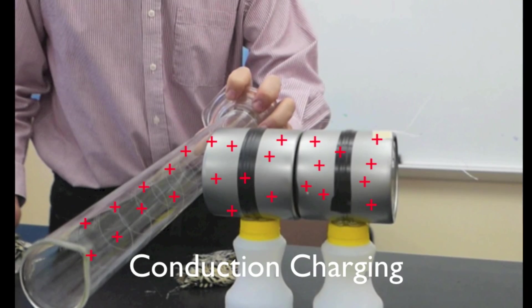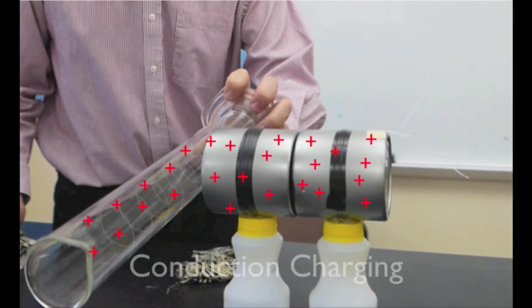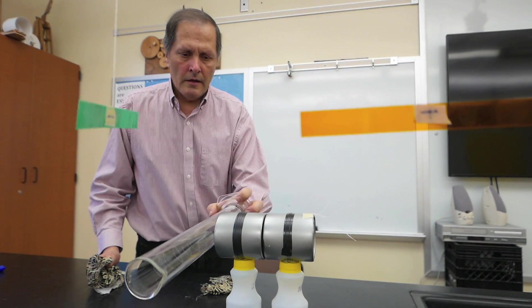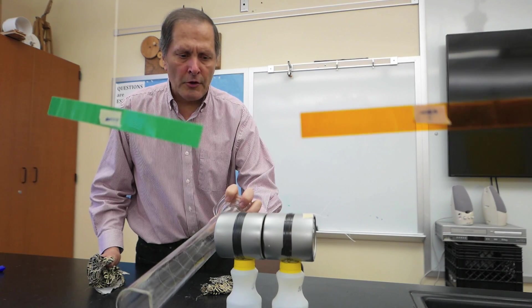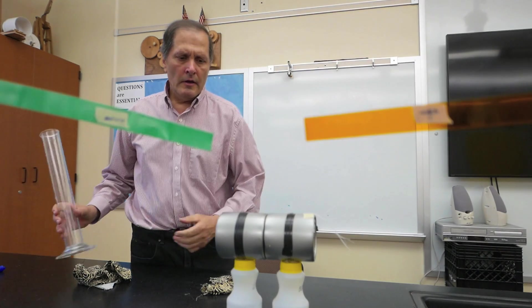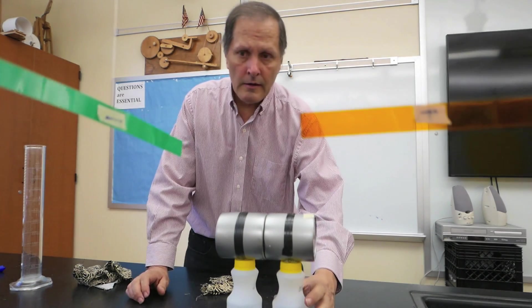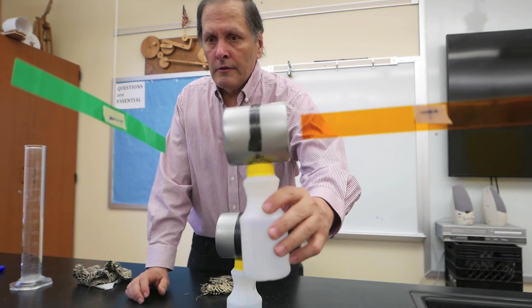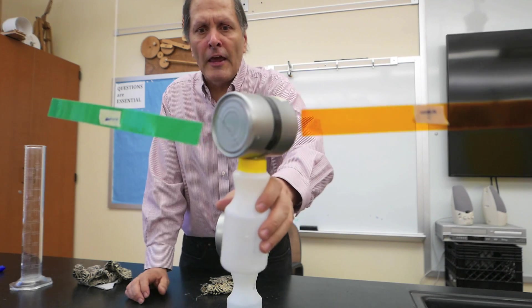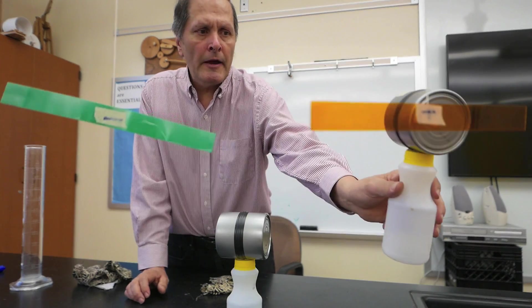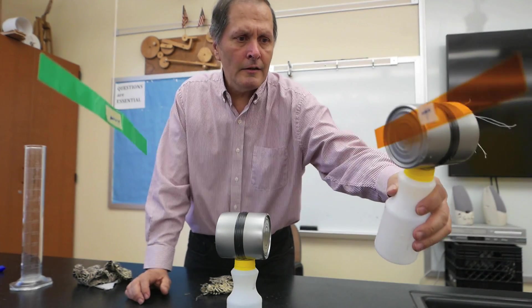By touching the cans, I'm actually removing its electrons. So we'll conduct a positive charge onto the cans. Let's test that. It should attract the vinyl, which is negatively charged, and repel the acetate. There we go.